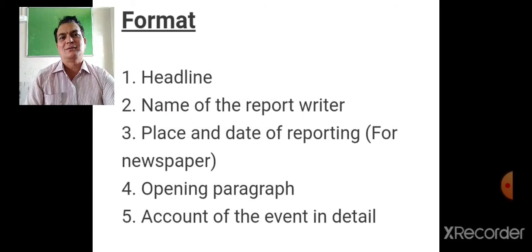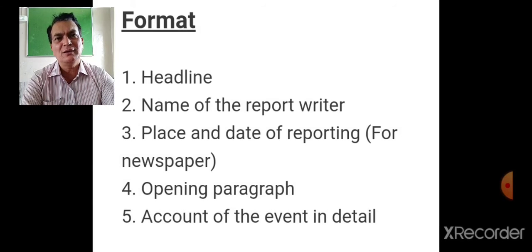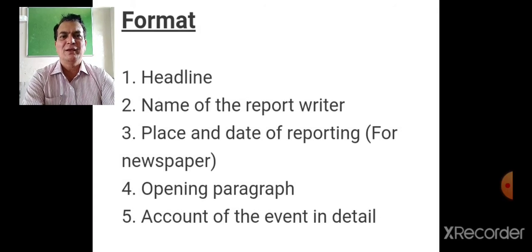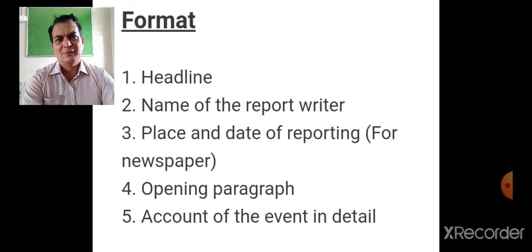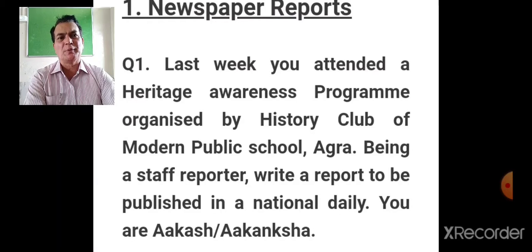To summarize the newspaper report format: the headline is required, followed by the byline (name of the report writer), then the dateline (place and date of reporting), then the opening paragraph, then the body paragraph with account of the event in detail, and finally the concluding paragraph.